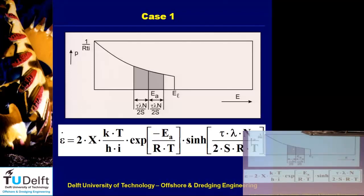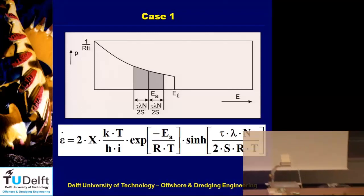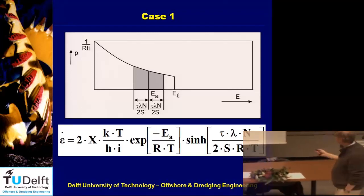Looking again at the equations: the cohesive force is the cohesion times the surface of the area where it acts; the adhesive force is the small-a (adhesive shear strength) times the surface. Substituting those into the cutting equation gives this equation for the horizontal force, where Cd (d for dynamic) means you must use the dynamic strength. The variables are cohesion, layer thickness, adhesion, blade height, shear angle beta, and blade angle alpha.